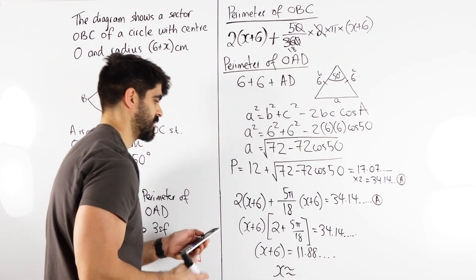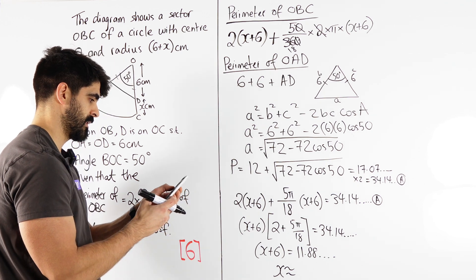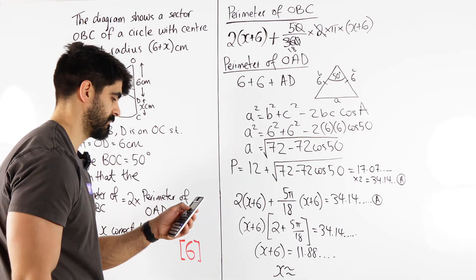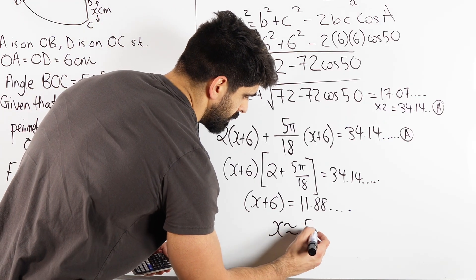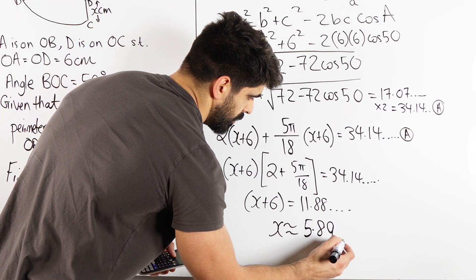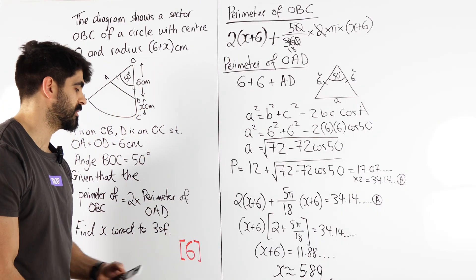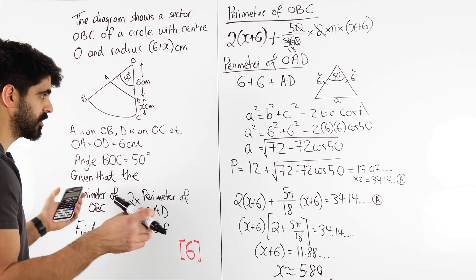So I have x plus 6, which I don't even need a bracket anymore. Is 11.88. And now, I can just subtract 6. 5.89. Because they want 3SF. 5.89. Now x is part of that centimetre, so you don't need to put centimetres there. And there you go guys.